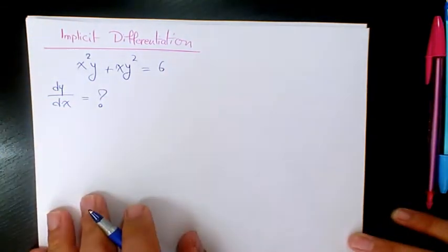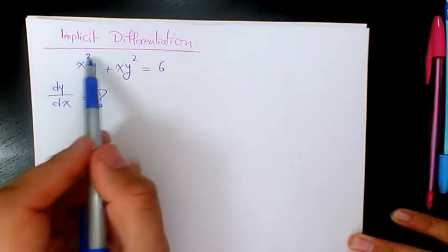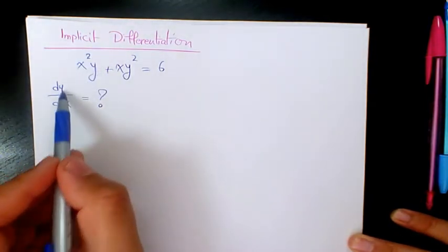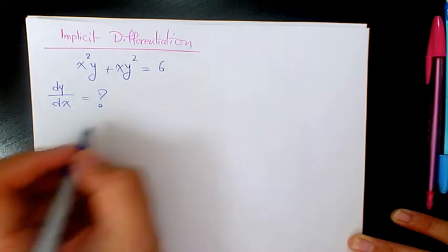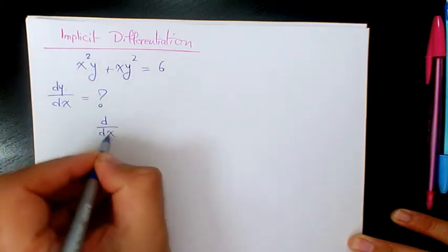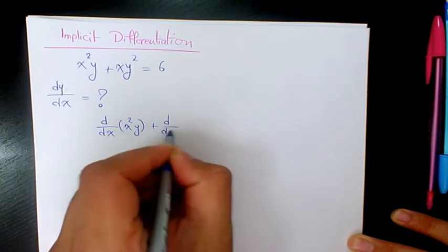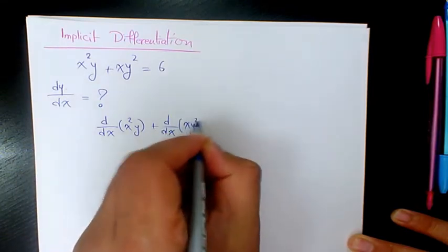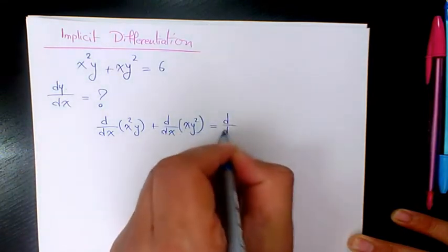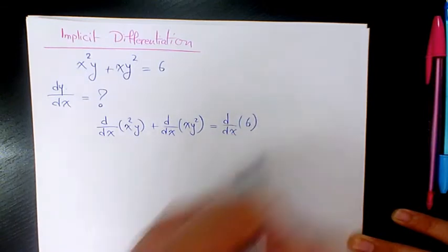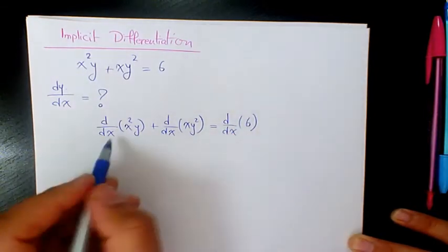So let's start solving it. In order to find out the first derivative of y with respect to x, we need to find out the derivative of x squared y with respect to x, plus the derivative of x y squared with respect to x, and it's equal to the derivative of 6 with respect to x.